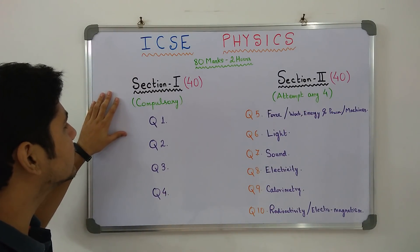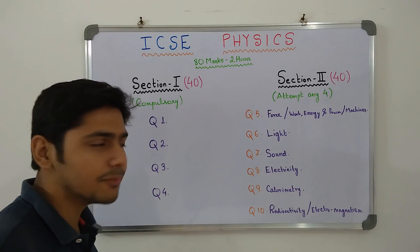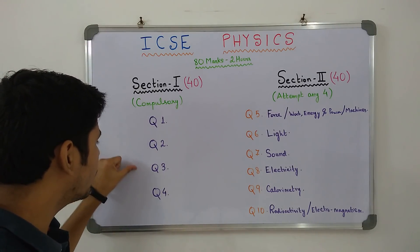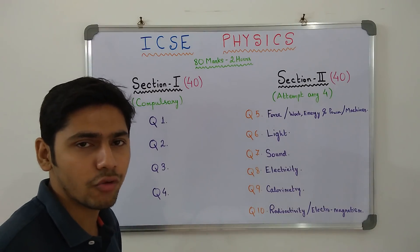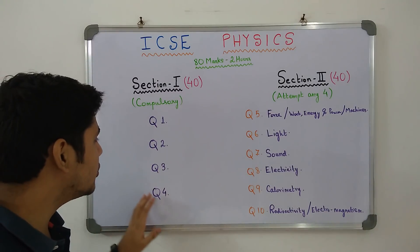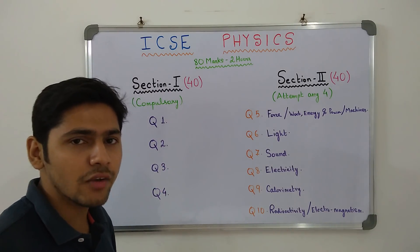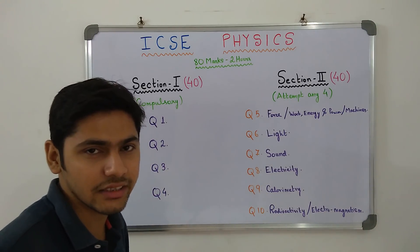Section 1 40 marks. This is a compulsory section and you have to attempt all the questions in this section. There will be 4 questions. Question 1, Question 2, Question 3 and Question 4 of 10 marks each to give you 40 marks. There is no chapter combination over here. Questions come jumbled up from all the chapters. So if you want to score 40 out of 40 in this particular section, you have to study pretty much everything.